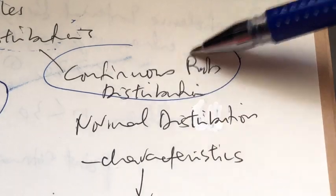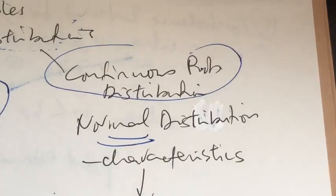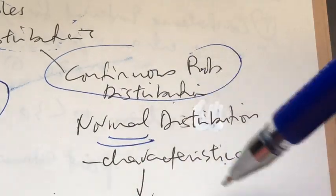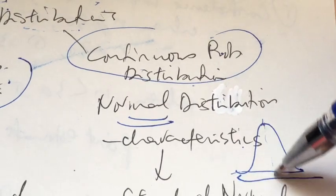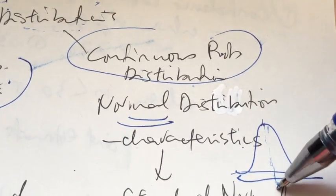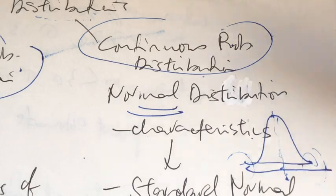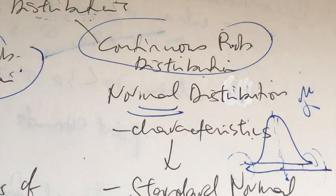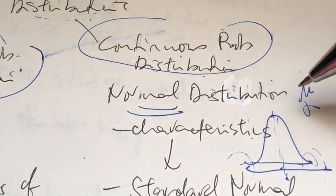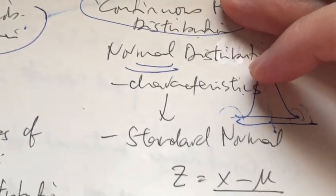Now let's move on to the continuous probability distribution. We only learned one type: the normal distribution, so it's relatively simple. Please know the characteristics of the normal distribution. It is symmetrical, meaning there is only one peak, and at that peak the mean, median, and mode are all equal. It is also asymptotic. There are many normal distributions, each characterized by its mean and standard deviation — forming a family of normal distributions.